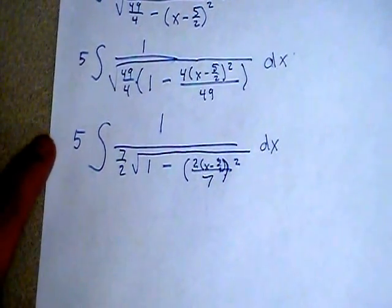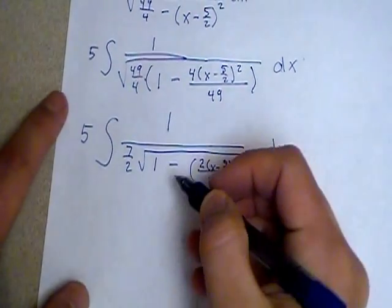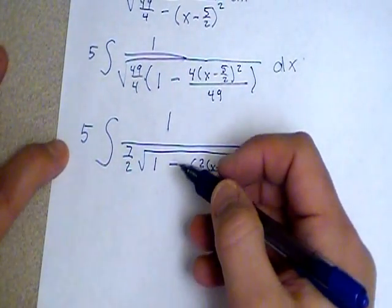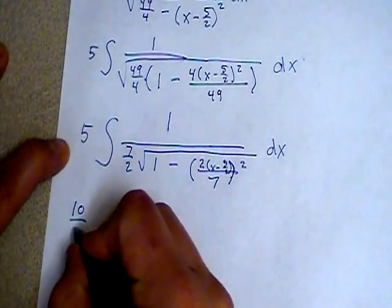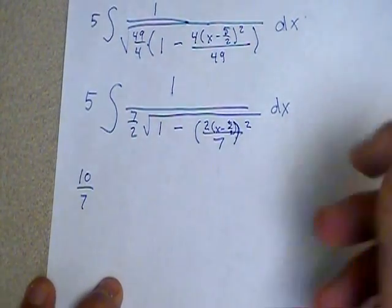So now I'm going to clean this up one more time before taking the substitution steps. I'm going to pull the 7 halves out here. It's going to be 5 divided by 7 halves. Rather than dividing by 7 halves, I'd like to multiply by 2 sevenths. So that will be 5 times 2 sevenths, which gives us 10 over 7.